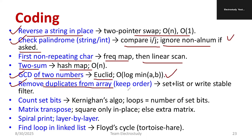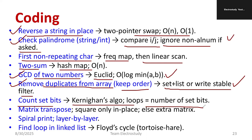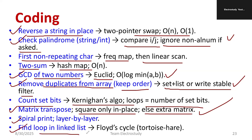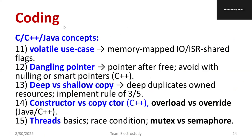To remove duplicates from an array, keep the order using a set or list, or write a stable filter. Count set bits using Kernighan's algorithm — the loop counts the number of set bits available. To calculate the transpose of a matrix, interchange rows and columns — for a square matrix do it in place, otherwise use an extra matrix. Similarly, spiral print and find a loop in a linked list using Floyd's cycle detection. These are the simple questions you will get in the coding section.